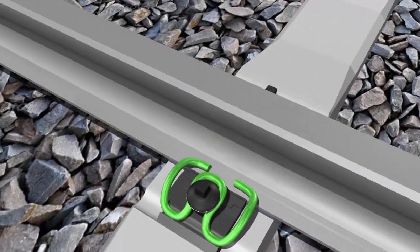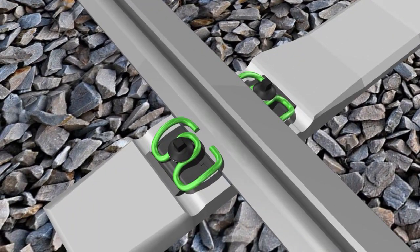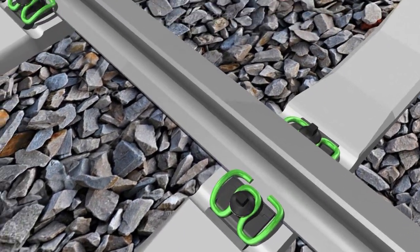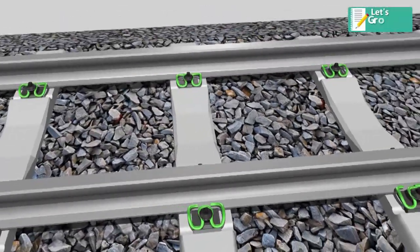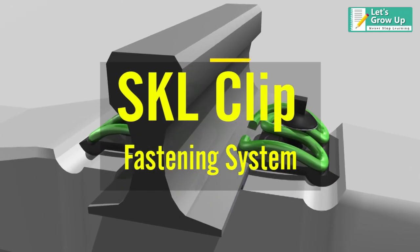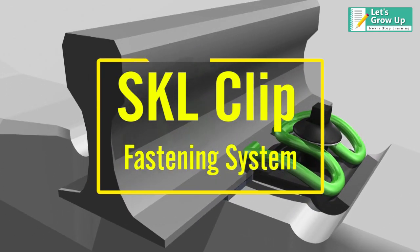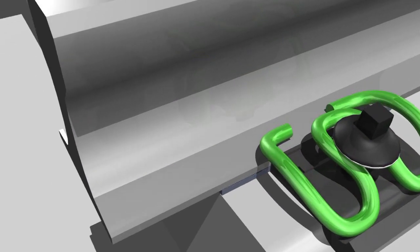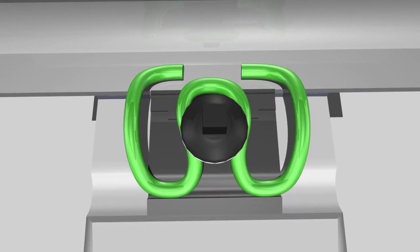SKL rail clips, also called SKL tension clamps, were first developed by German railway. In this video, we will learn about the SKL clip fastening system. The shape of the Voslo tension clamp is like a W, so we also call it a W clip. W type fastening systems and SKL clips are very popularly used.